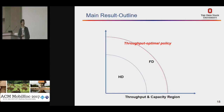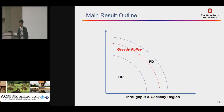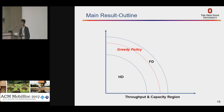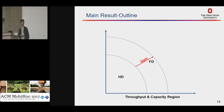Here are the results of our work. First, we have proposed a throughput-optimal policy which can stabilize every arrival rate vector within the capacity region of full-duplex. Next, we have proposed a greedy policy which can stabilize two-thirds of the optimal throughput region. This greedy policy also outperforms any policy under half-duplex. For the third part, we characterize the full-duplex gain over half-duplex.